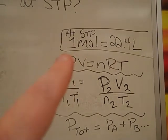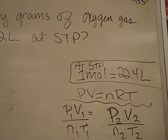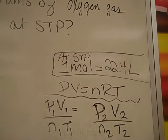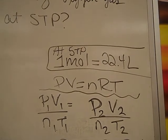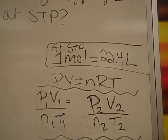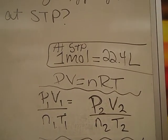Now up here I've put the shortcut. If the problem tells you that you're at standard temperature and pressure, which ours does, we have a shortcut because we know that any gas, one mole of it at STP, will equal 22.4 liters.